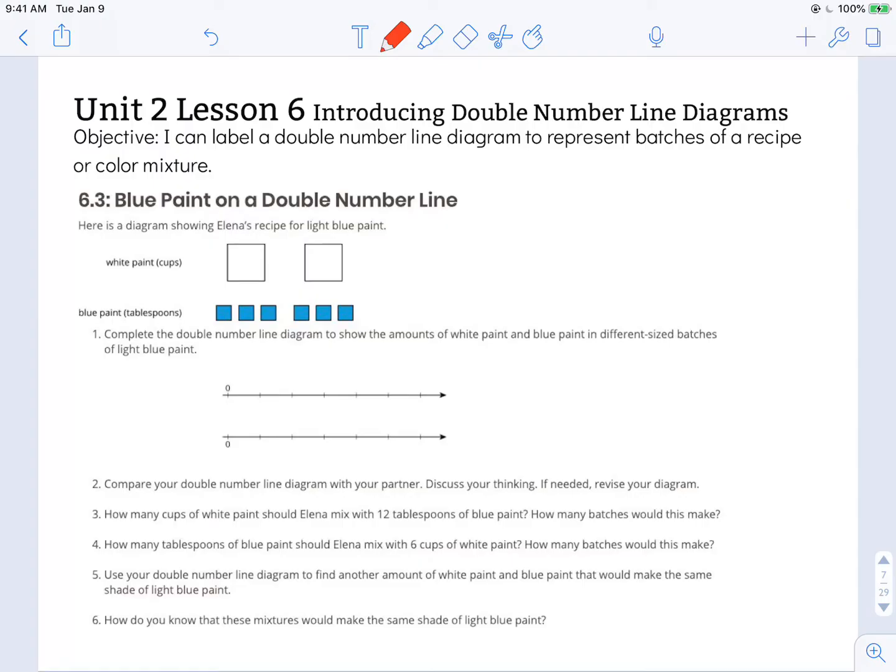So we're going to go ahead and label these the same. So I've got white paint in cups and blue paint in tablespoons. So one recipe or one batch calls for two cups of white paint for six tablespoons of blue paint. So this is one batch. So if I doubled that batch then I'd have twice as much white paint and twice as much blue paint and I could continue at that rate.